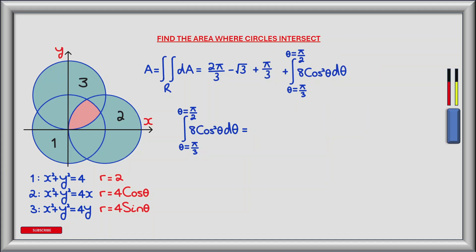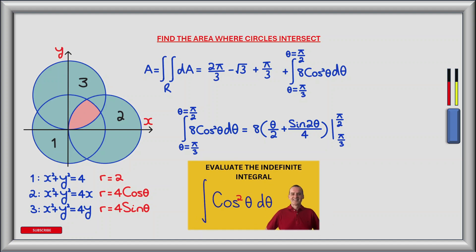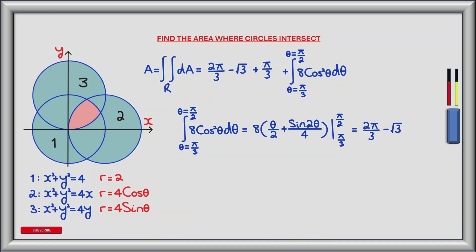The last outer integral requires us to integrate 8 cos squared theta d theta between theta equals pi by 3 and theta equals pi by 2. The anti-derivative is 8 times the bracket of theta divided by 2 plus sin 2 theta divided by 4, evaluated between pi by 3 and pi by 2. Plugging in these values gives 2 pi by 3 minus the square root of 3. That completes the integrals.